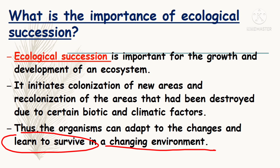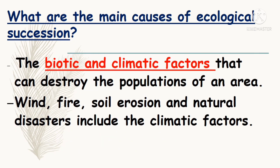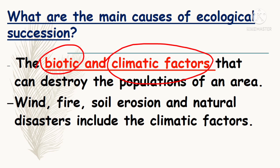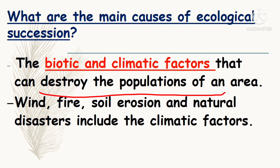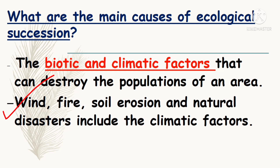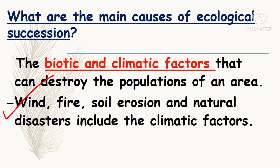The main causes of ecological succession are only two things: the first one is biotic factors and the second one is climatic factors. Due to these, populations can be destroyed. These are the two main causes of ecological succession.